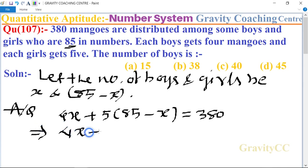4x plus 425 minus 5x equals 380, which implies that